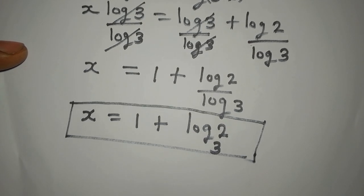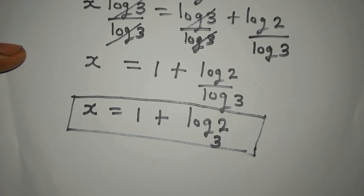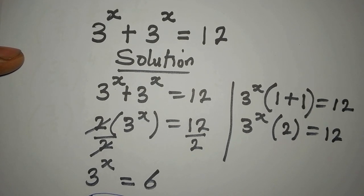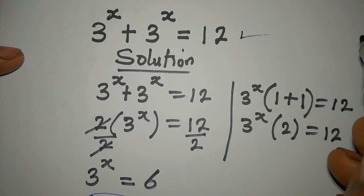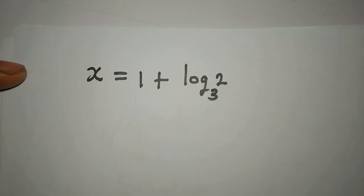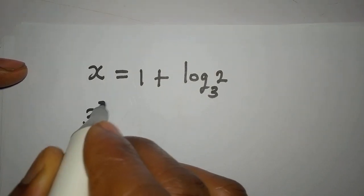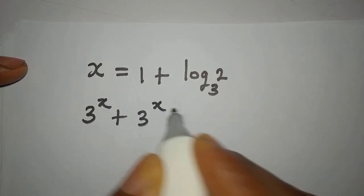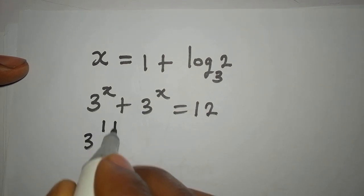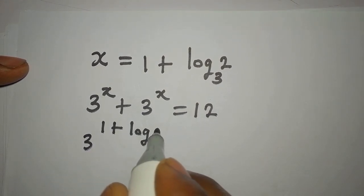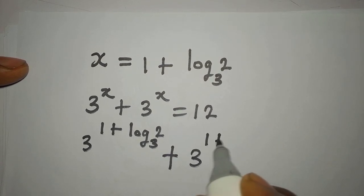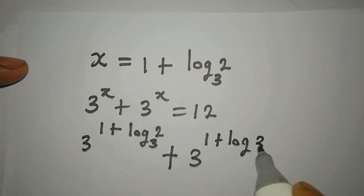We have to put this back into the original equation, which is 3 to the power of x plus 3 to the power of x equals 12, to verify it satisfies the equation. So we substitute: 3 to the power of (1 + log 2 to base 3) plus 3 to the power of (1 + log 2 to base 3).